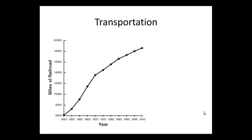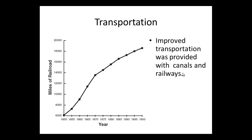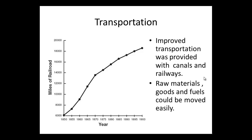Transportation also increased during this time. If we look at the miles of railroad, as well as the increase in canals in the United Kingdom — transportation for railroad improved because of the engines available. This also meant that raw materials, goods, and fuels could easily be moved around, serving as a complement to all the other changes taking place.